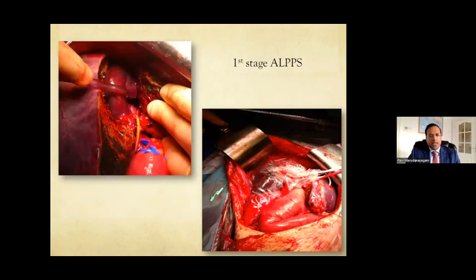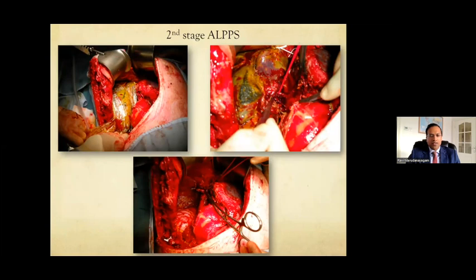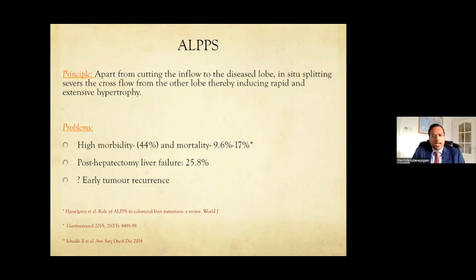An early ALPPS case showed significant FLR hypertrophy in one week on CT, but the second stage is not an easy operation — everything is completely plastered. ALPPS fell out of fashion due to high morbidity from significant inflammatory response, bile leak risk, and non-insignificant mortality. It also didn't significantly reduce post-hepatectomy liver failure. In our center, an important risk factor was young age — patients under 60 couldn't withstand two big operations within a week and had very bad outcomes. With dual vein embolization now available, we've completely stopped doing ALPPS, as have most UK centers.